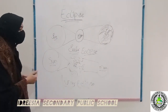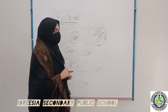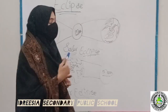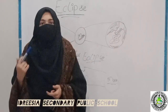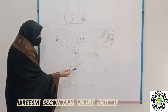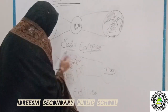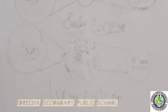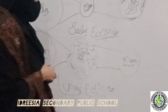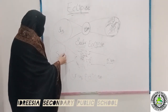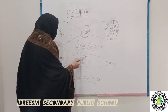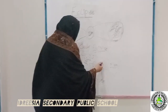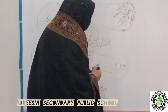The second type is Lunar Eclipse. What is Lunar Eclipse? Lunar Eclipse occurs when the earth comes between the sun and the moon. Because the sun rays are covered by the earth, and the shadow of the earth comes on the moon.